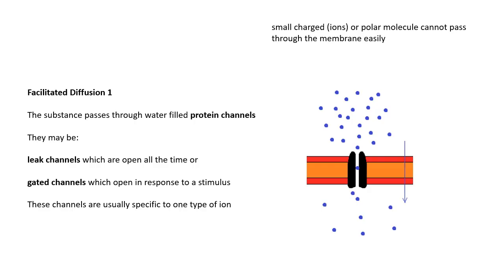Small charged particles, ions, or polar molecules cannot pass through the membrane easily. They can't go through the layer. They need to go through protein channels, which is basically a pore, a hole in the membrane, which is through the middle of a large protein complex. These are protein channels. These channels may be open all the time, and they're called leak channels, or they may be gated. They may open when something happens, and that's called a gated channel, some kind of stimulus. And these channels are usually specific to a particular type of ion. This is one type of facilitated diffusion. Again, it is passive. It doesn't require any energy.